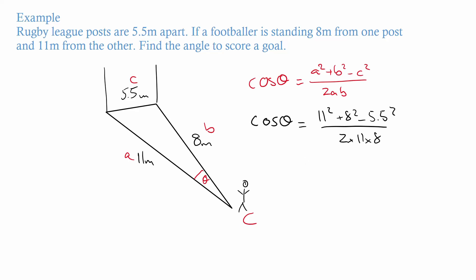Then we need to do our inverse cos. That'll cancel that cos out, so θ is going to equal inverse cos of 11 squared plus 8 squared minus 5.5 squared all over 2 times 11 times 8. That comes out at 28 degrees and 27 minutes.